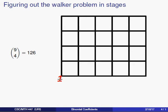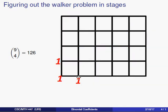Returning to the walker problem, let's imagine counting the routes not just as 9 choose 4, but answering the problem in a different way — in stages. We want to keep track not just of how many ways there are to get to the very end of the grid, but how many ways there are to get from the lower left-hand corner to anywhere in the grid. Starting in the bottom left: how many ways are there to get from the lower left-hand corner to the lower left-hand corner? There's only one way — you simply stay put.